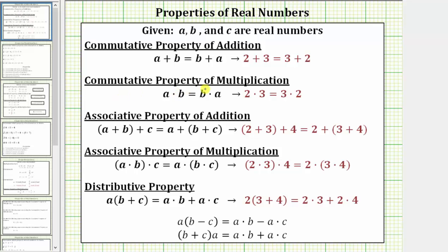The commutative property of multiplication is given as a times b equals b times a. When we change the order of multiplication, we are using the commutative property of multiplication.